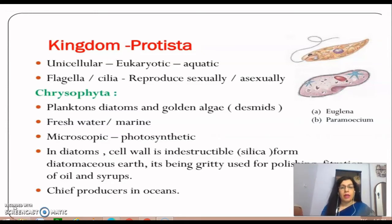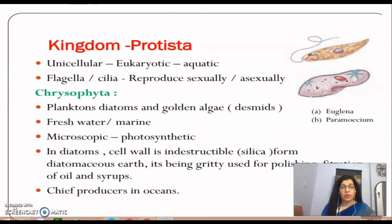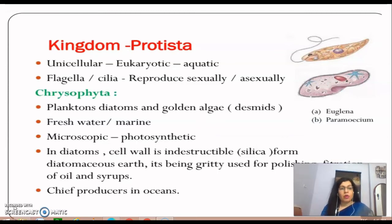These organisms are aquatic and normally show movement with the help of one or two flagella, or a large number of cilia present all around their body. Their mode of reproduction may be sexual or asexual. Sexual reproduction involves the formation of a zygote; asexual reproduction is normally by binary division.